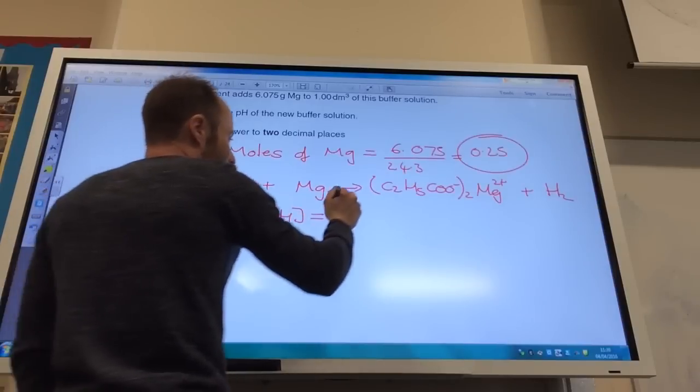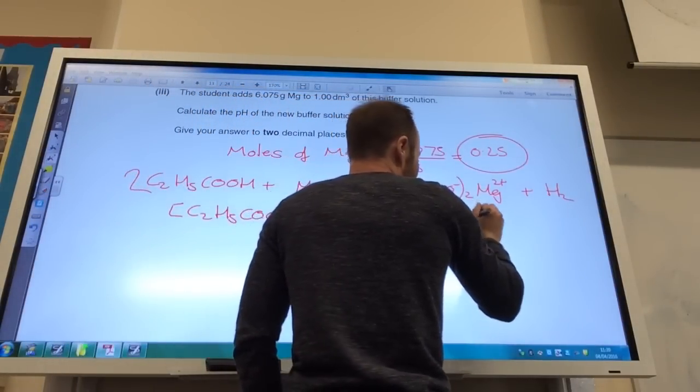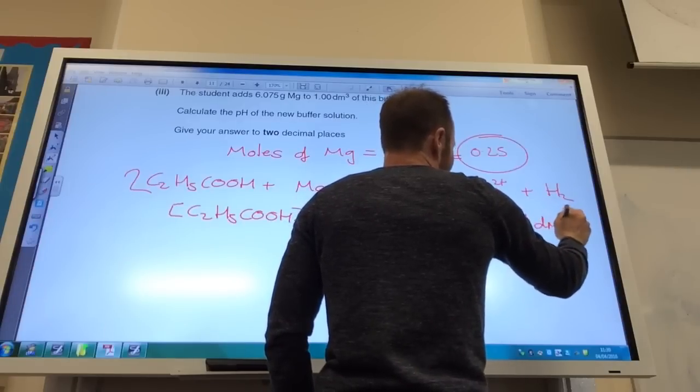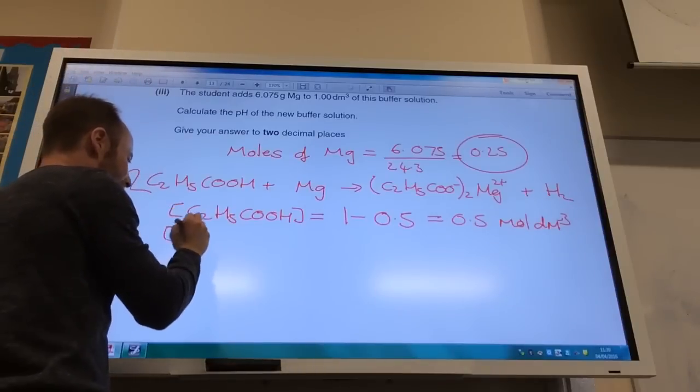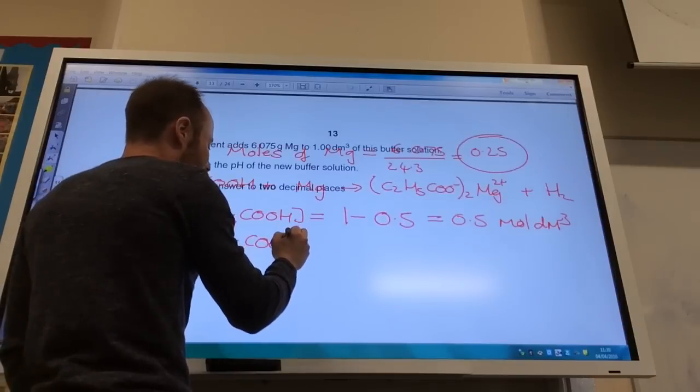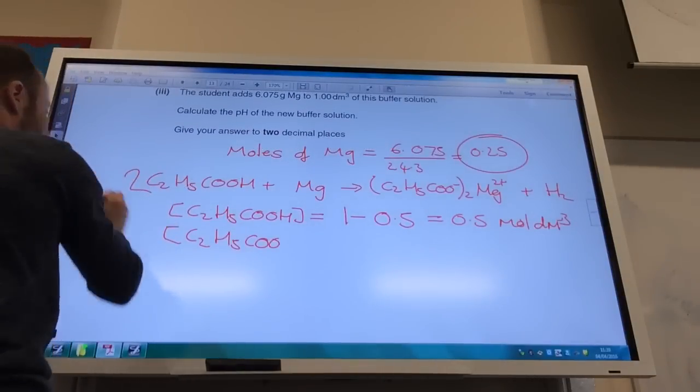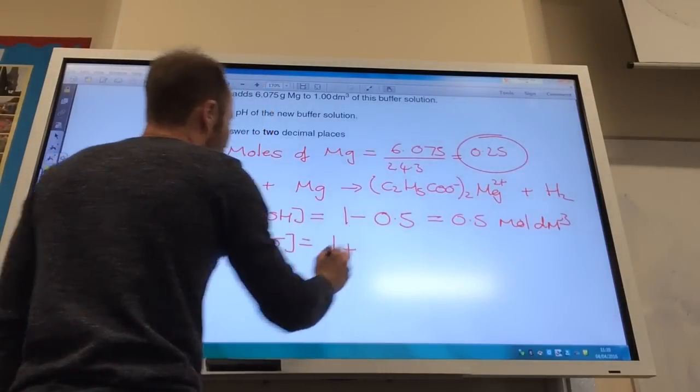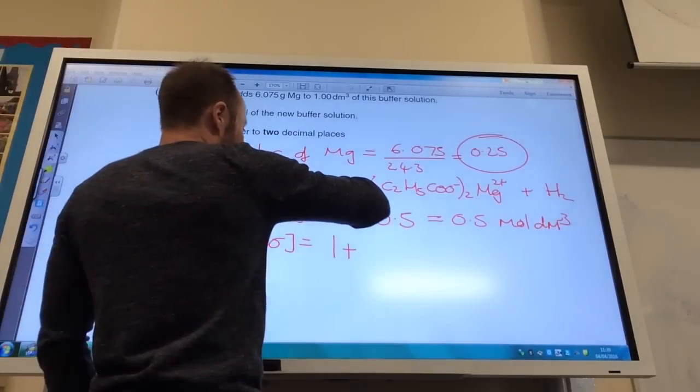So my new concentration is 1 minus 0.5 which is 0.5 moles per decimeter cubed. But in this reaction I have made more propanoate ions. So again, I started with 1 mole per decimeter cubed.